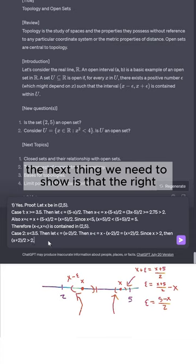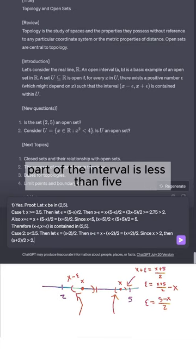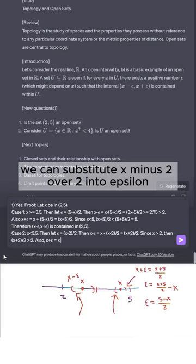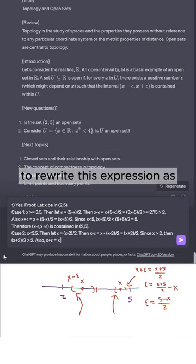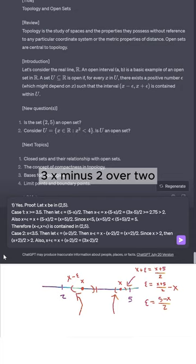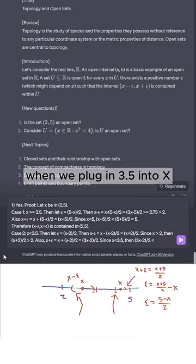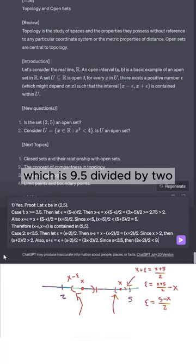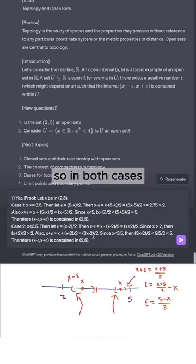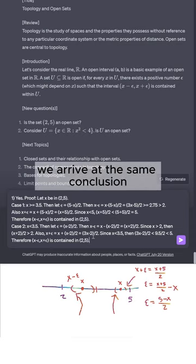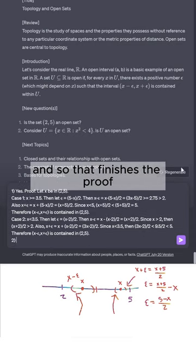The next thing we need to show is that the right part of the interval is less than 5. We can substitute (x - 2)/2 into epsilon to rewrite this expression as (3x - 2)/2. Now since x < 3.5, then (3x - 2)/2 is less than what we get when we plug in 3.5 into x, which is 9.5/2, and that is less than 5. So in both cases for case 1 and case 2, we arrive at the same conclusion, and that finishes the proof.